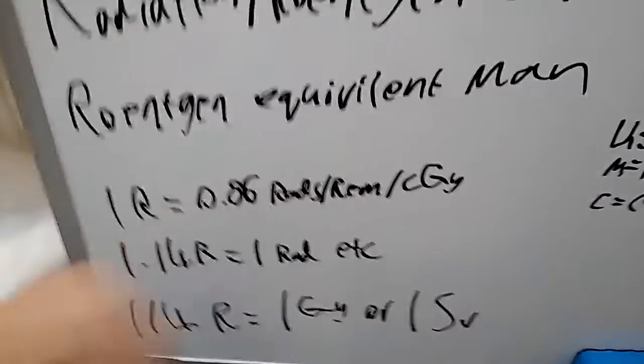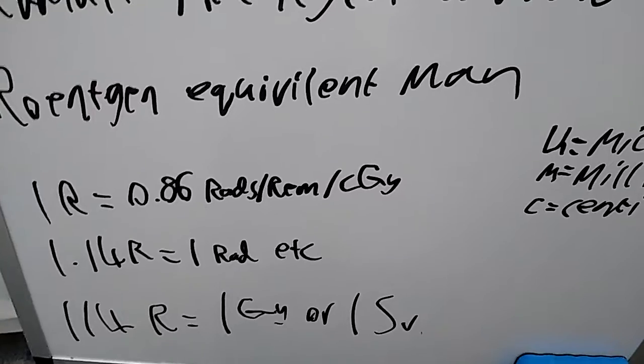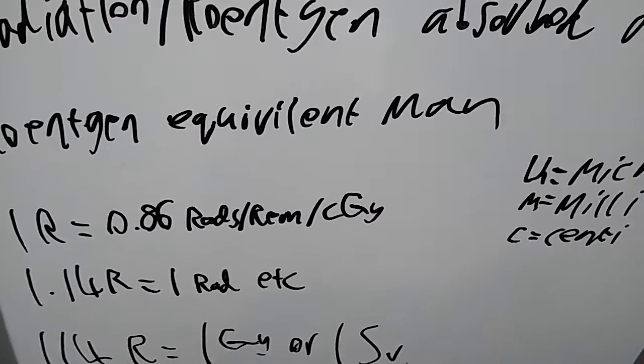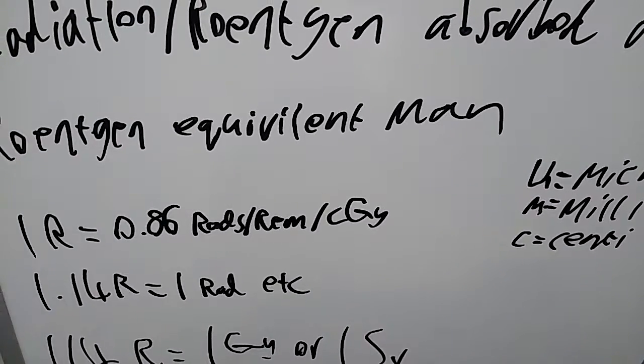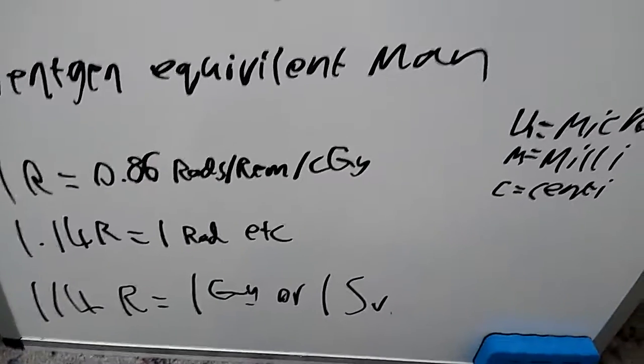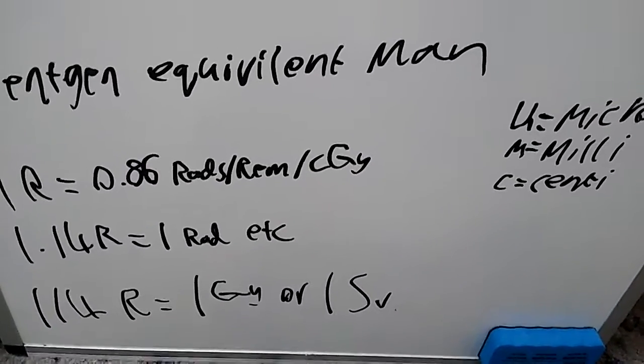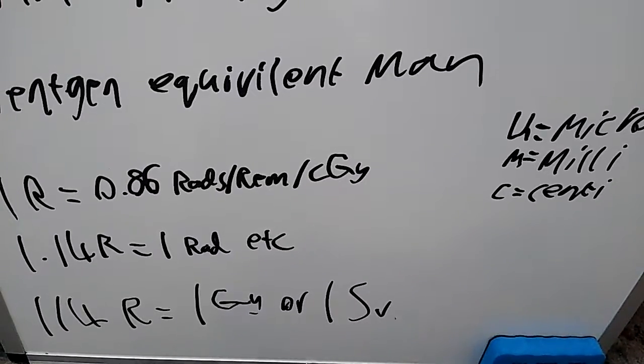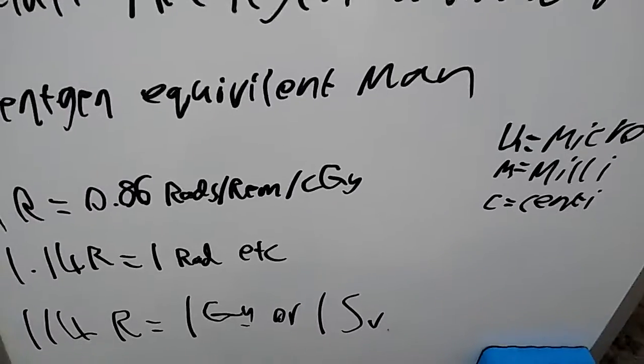Some old units will basically say 1R equals 1CGY, and it technically doesn't on paper. But for simplicity reasons, the 0.14 is sometimes just cancelled out.